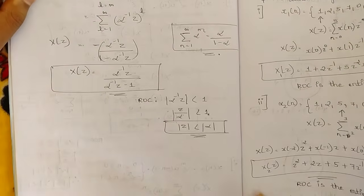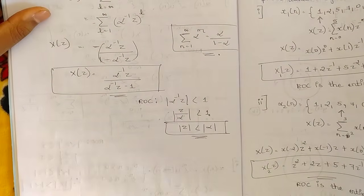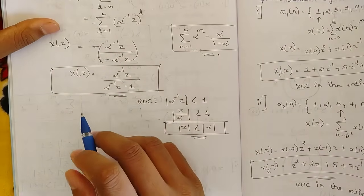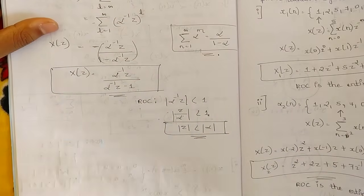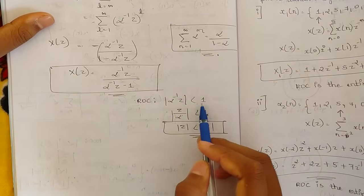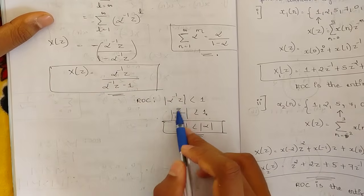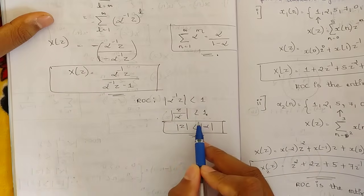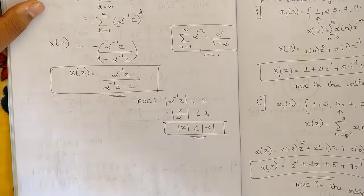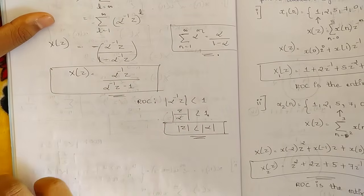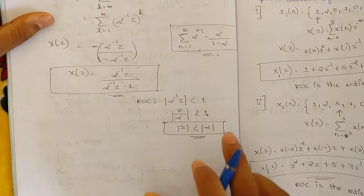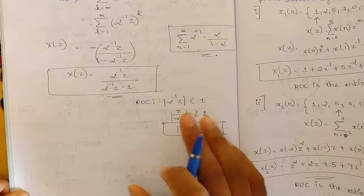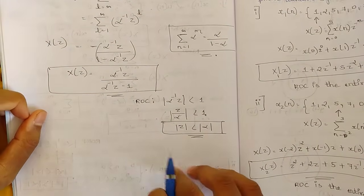For the ROC of this sub-question, |α^(−1)·z| must be strictly less than one, i.e., |z/α| < 1, so |z| < |α|. Notice the contrast: in sub-question 1 the ROC was |z| > |α|, while here it is |z| < |α|. This completes question 3a.